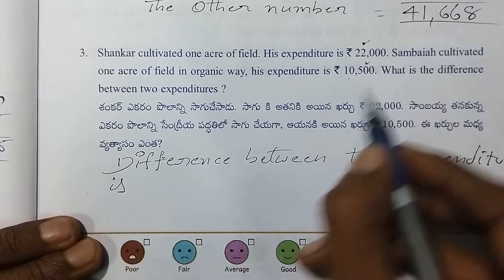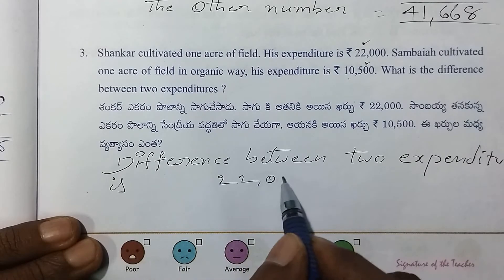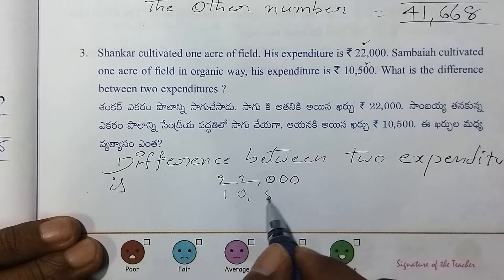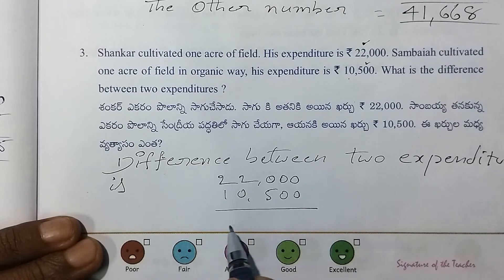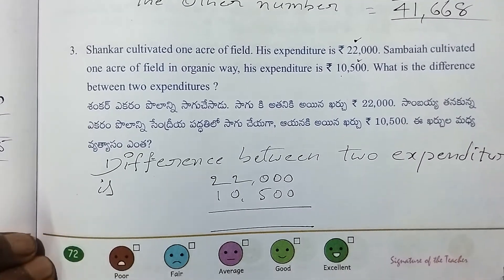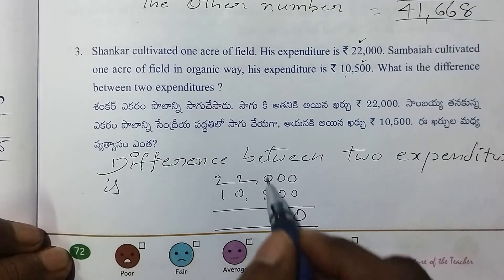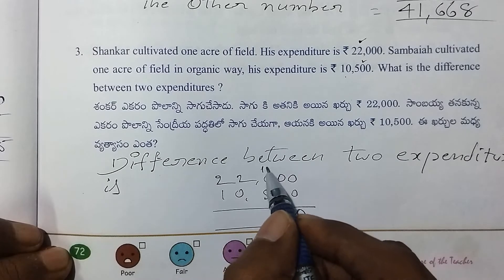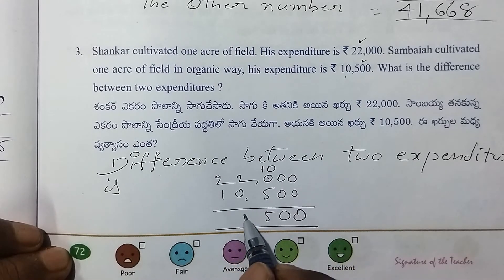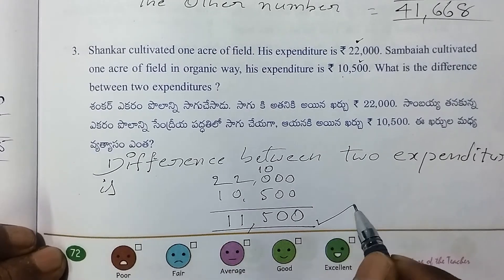First value is 22,000. Second value is 10,500. Subtracting: 0 from 0 is 0; 10 from 10 is 0; and the difference is 11,500.